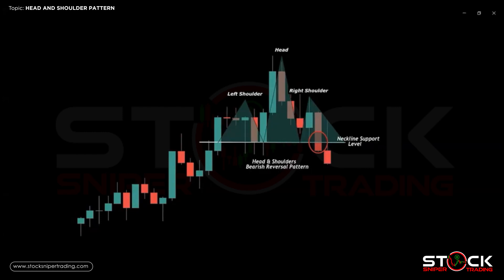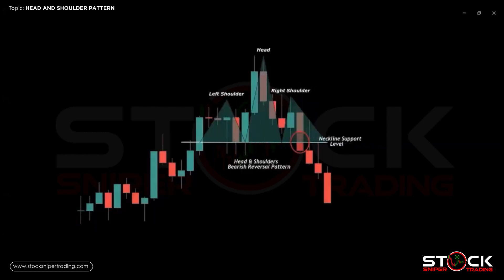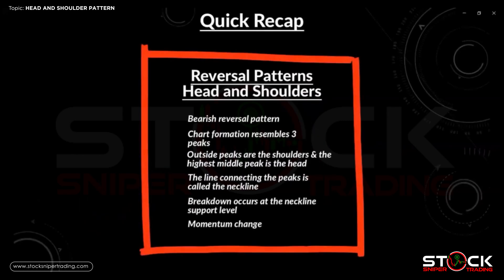Quick recap: the head and shoulders is a bearish reversal pattern. It is a chart formation which resembles three peaks — the outside peaks are the shoulders and the highest middle peak is the head. The line connecting the peaks is called the neckline, and the breakdown occurs at the neckline support level where we get a momentum change from bullish to bearish. We hope you enjoyed this tutorial on the head and shoulders bearish reversal pattern, and in our next tutorial we will introduce the opposite pattern — the inverse head and shoulders bullish reversal pattern.